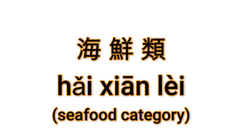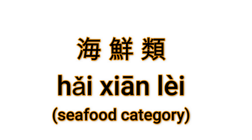海鲜 — the character 海 has the water radical because it's about the ocean. And 鲜 — you can see the fish component in it. 类 means category as we said before, so 海鲜类 means the seafood category.